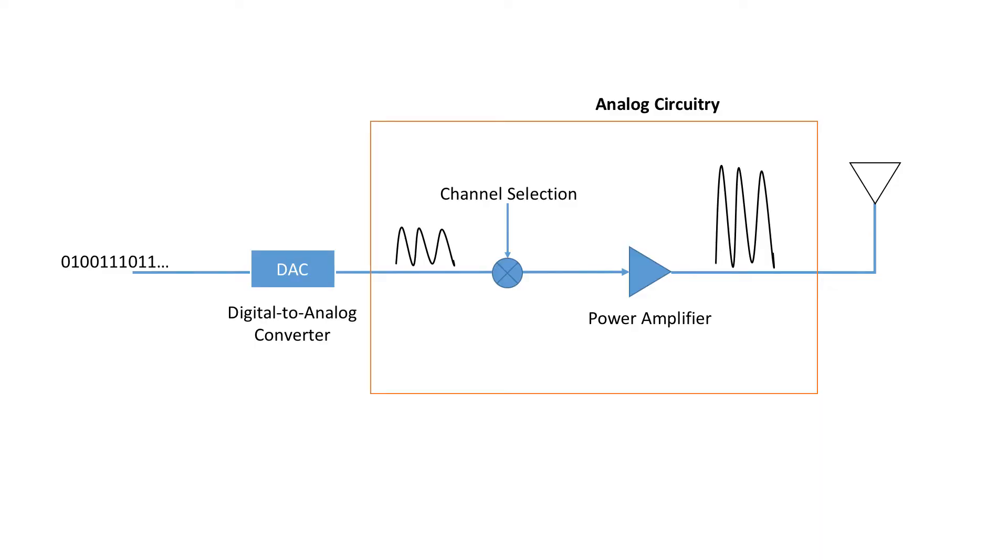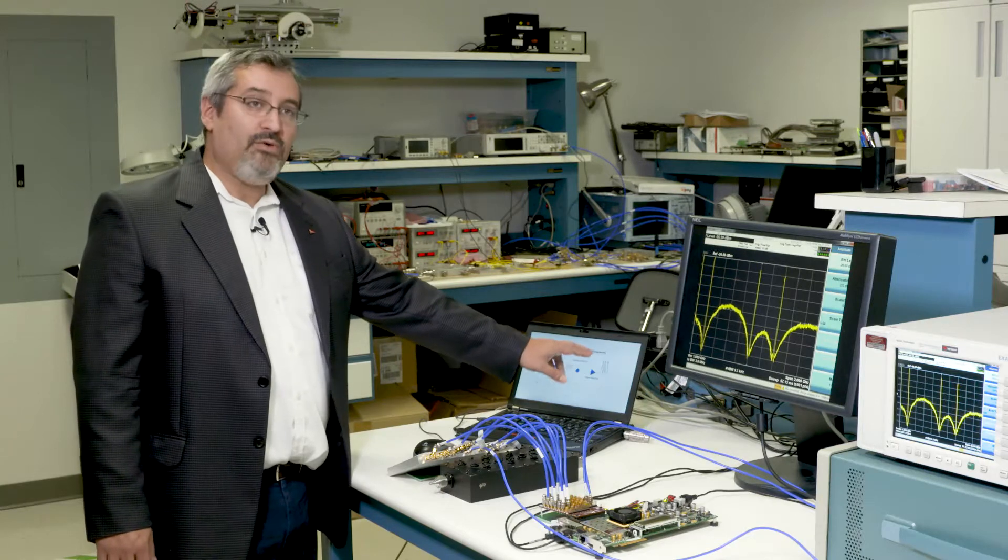So I'd like to first talk a little bit about how we do wireless communications today. Very simply, a wireless communication device takes our information bits, our digital information, sequences of zeros and ones, and converts that through a digital to analog converter into an analog signal or a radio signal. That radio signal is then tuned to the correct channel or frequency band and then is amplified through a power amplifier so that it can be transmitted over long distances to the intended receiver.